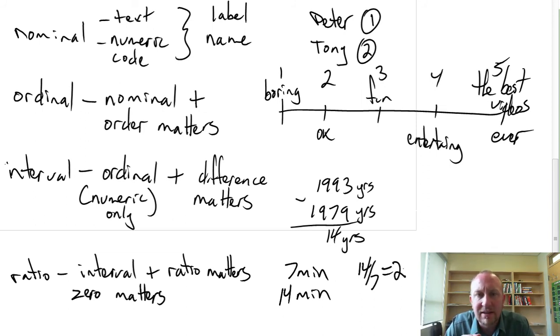Now, when I say zero matters, it means that if this variable takes on the value of zero, it means that the variable does not exist at that point. So if this video is zero minutes, really it means that the video doesn't take place. It means that the video doesn't exist if it is in fact zero minutes. Okay, so hopefully that helps to illustrate some of the differences between all of these different variables that we're looking at.